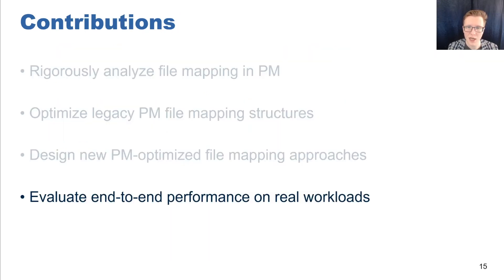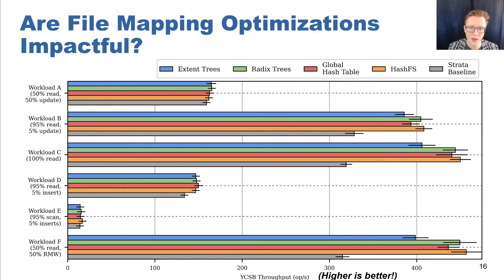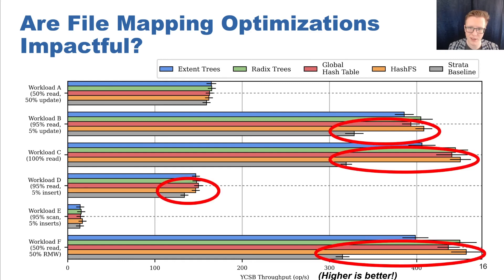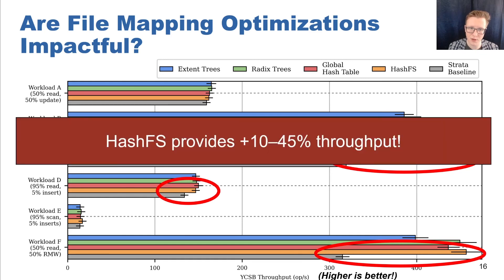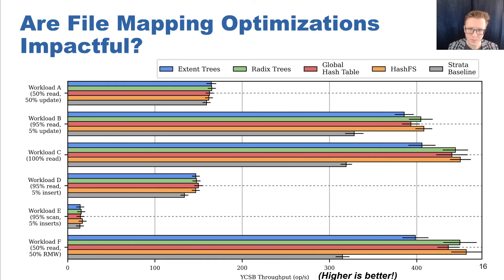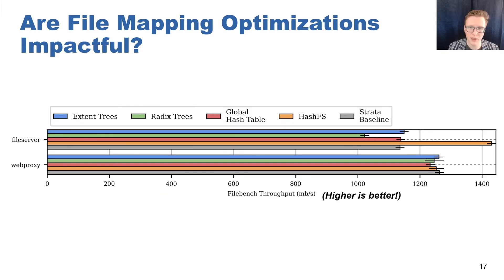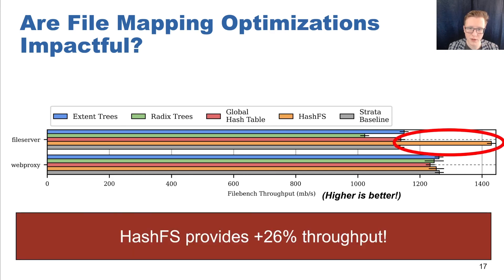Finally, let's discuss the overall impact of our file mapping approaches compared to the state-of-the-art. We compared the end-to-end application throughput of YCSB on all six workloads for our four file mapping approaches against the Strata baseline. Our file mapping approaches, and notably HashFS, provide better performance, improving throughput by 10–45% over the Strata baseline. Notably, persistent memory-optimizing radix trees perform up to 13% worse than other structures. We also compare throughput on the two FileBench workloads, where HashFS shows clear advantages even over other mapping structures we built. The file server workload, which is particularly write-heavy, demonstrates the benefits of HashFS's optimized block allocation and deallocation scheme. The web proxy workload is not bounded on Strata's IO path, and therefore all structures perform similarly.